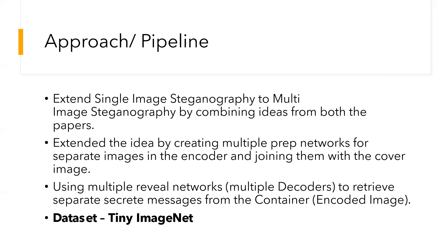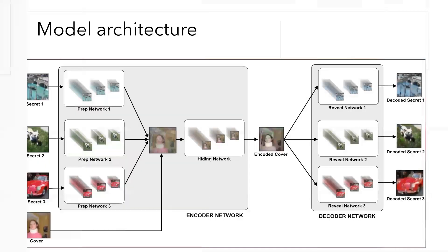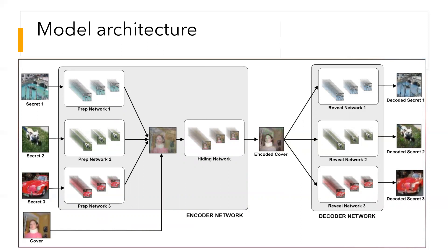We are using TinyImageNet as our dataset. Coming to the model architecture, we are using three different CNN architectures for the prep network, hiding network, and the reveal network. Each of these is a 3-layer network with 50, 10, and 5 layers.